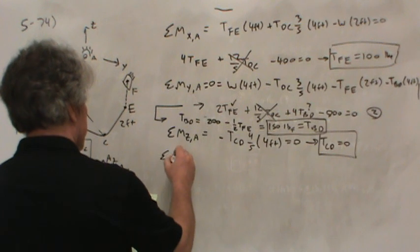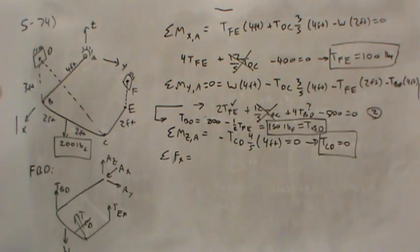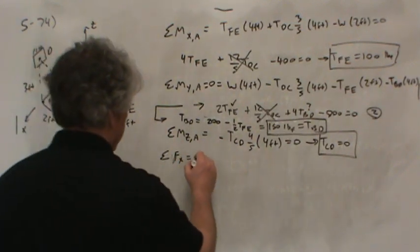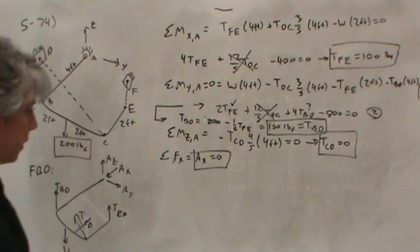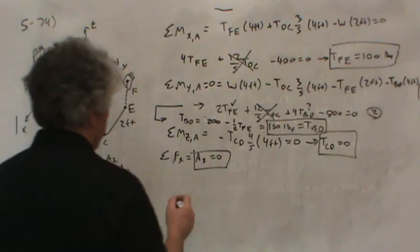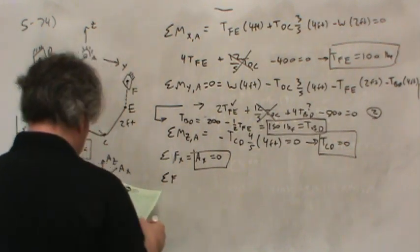Let's sum forces next in the X direction. Well, in the X direction, it looks like the only thing we have is AX. That was an easy one. AX is the only force, therefore it must be zero, otherwise the whole assembly would accelerate in the X direction.